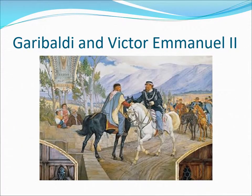Garibaldi continued to work his way northward, unifying the southern territories, and he was victorious. He agreed to let the king of Piedmont-Sardinia, who had been working with Cavour, rule the areas he had conquered. In March 1861, the Italian parliament met and declared Victor Emmanuel II the king of Italy.